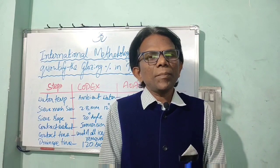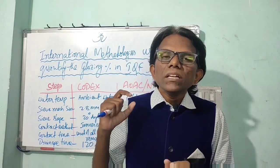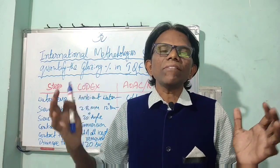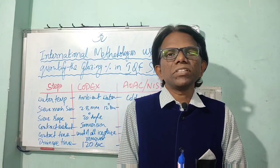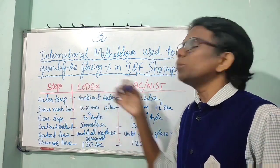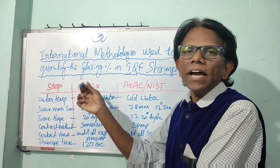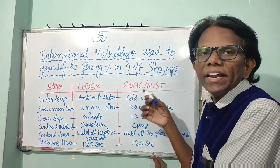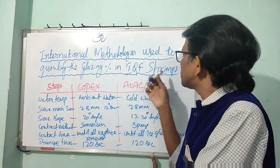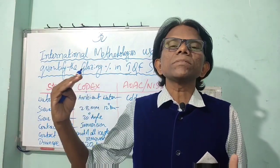Now let us discuss the international methods used to quantify the glazing percentage in IQF frozen shrimps. There are two methods available: the first is the Codex method to determine glazing percentage in IQF frozen shrimps, and the second is the AOAC or NIST method — the Association of Official Analytical Chemists or National Institute of Standards and Technology method.